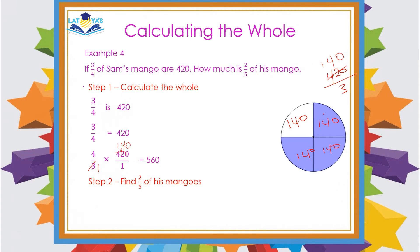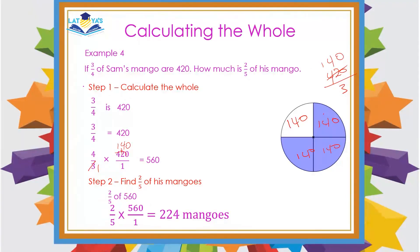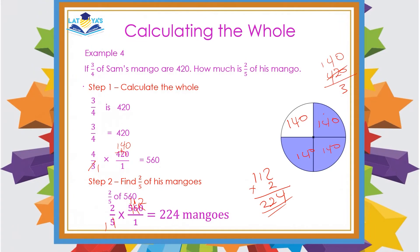Step 2 asks: how much is 2 fifths of his mangoes? He has 560 mangoes in total, so we have to find 2 fifths of 560. We write 2 fifths multiplied by 560. We always look for opportunities to reduce: 5 into 560 gives 112. Then 112 multiplied by 2 gives us 224 mangoes.